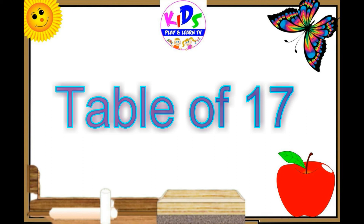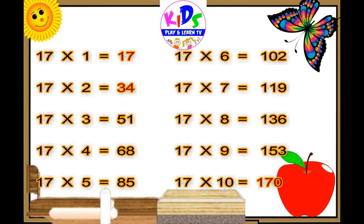Let's learn the table of 17. 17 1's are 17. 17 2's are 34. 17 3's are 51. 17 4's are 68. 17 5's are 85.